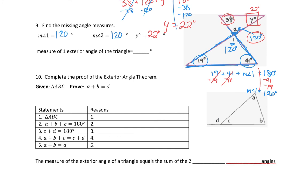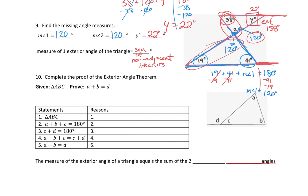Over here it says the measure of one exterior angle of a triangle is equal to the sum of the non-adjacent interiors. If it asked for the exterior angle with angle Y, it would equal 120 plus 38, which makes 158. And this exterior angle would equal the sum of the non-adjacent interiors: 19 plus 120 equals 139.